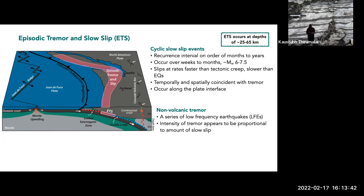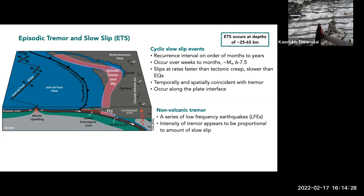Slow slip events can release as much energy as a magnitude 6 to 7.5, so they're releasing a lot of energy — if this were happening quickly it would be a large earthquake. We know slip rates here are faster than tectonic creep rates but slower than earthquake slip rates. They appear to be temporally and spatially coincident with tremor or non-volcanic tremor. These events have been largely identified geodetically with GPS measurements. Non-volcanic tremor appears to consist of a series of low-frequency earthquakes, and the intensity of tremor appears to be proportional to the amount of slow slip happening.